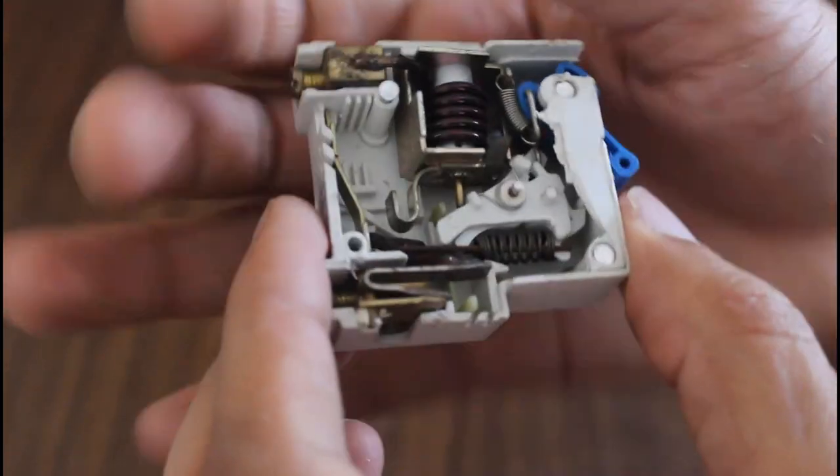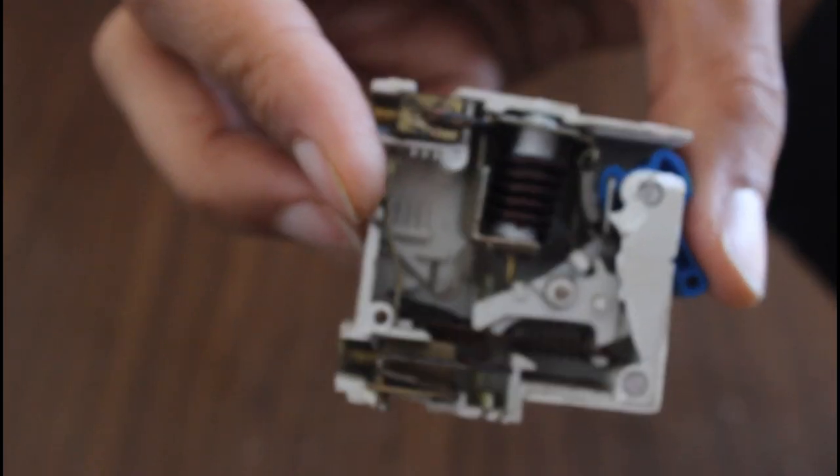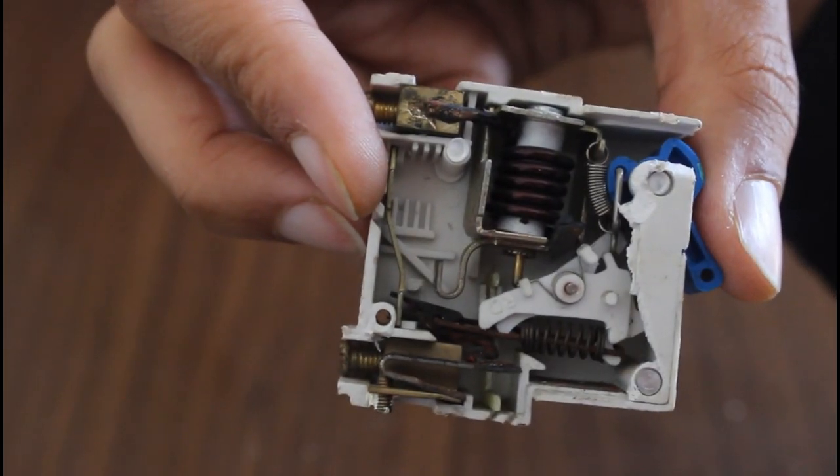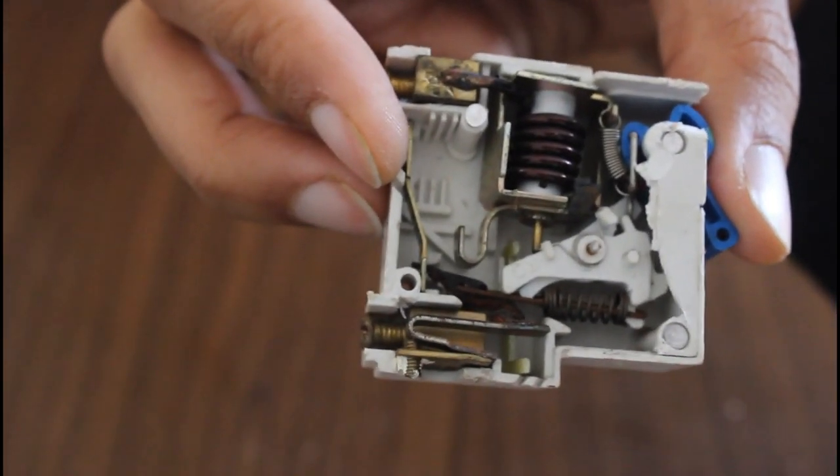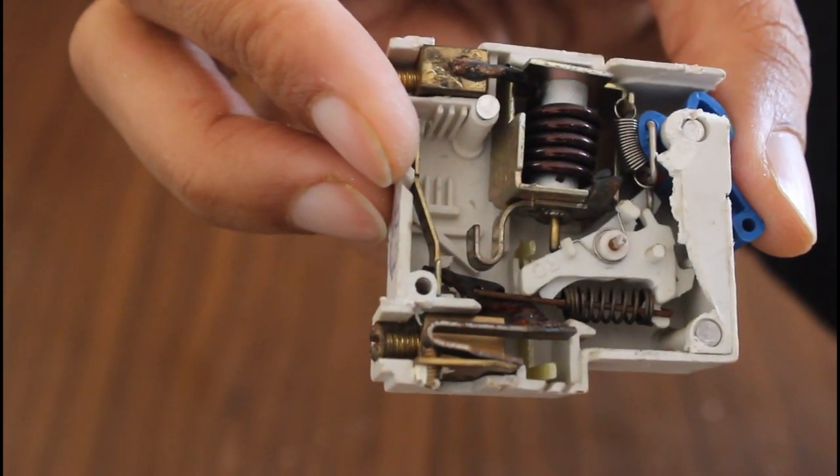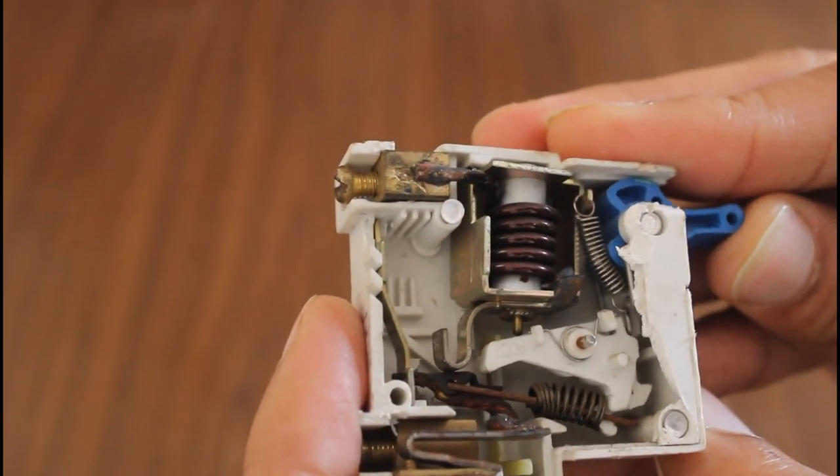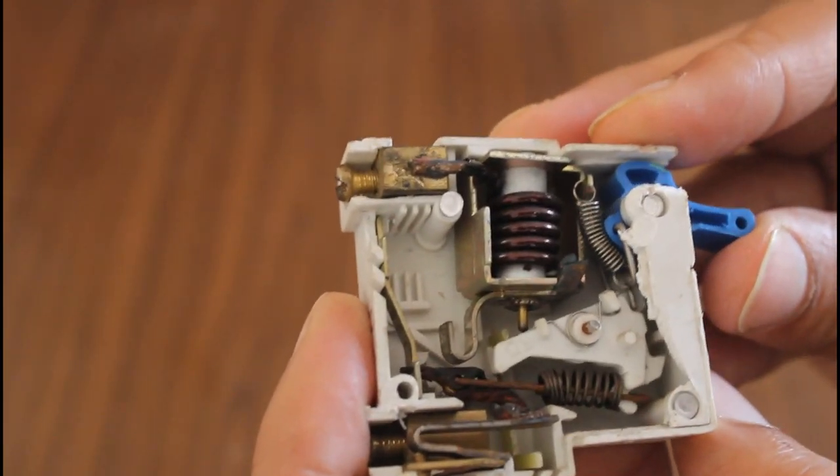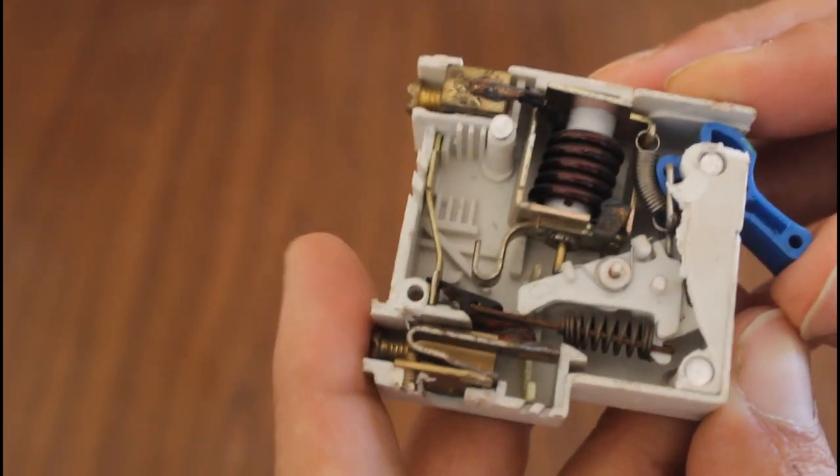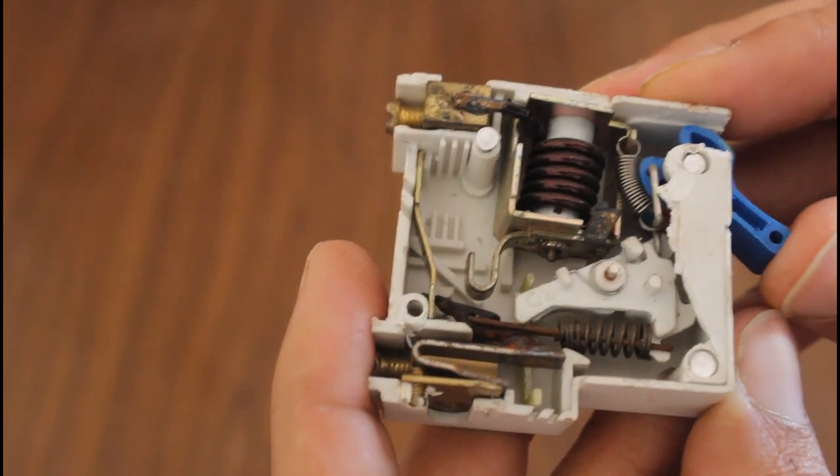Okay so this MCB contains the springs, there are two to three springs and a coil. This coil is actually the main part of this MCB. This coil works as a magnetic gun.